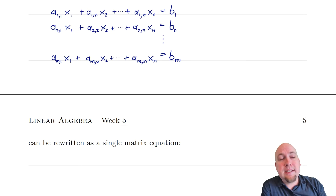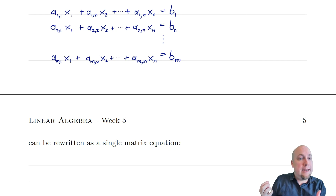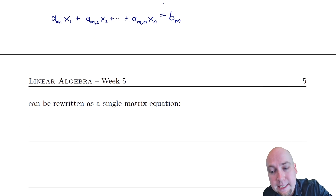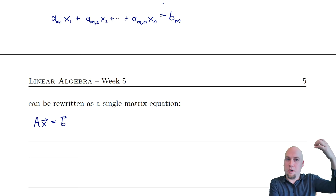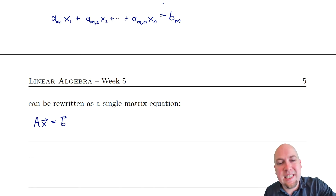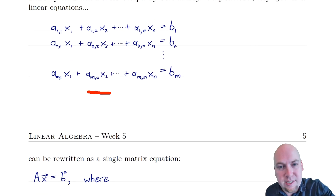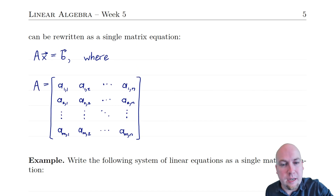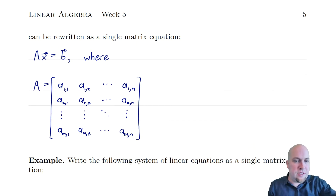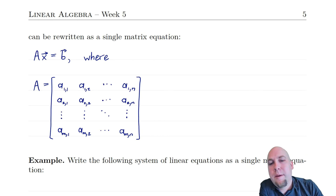This ugly linear system can be written much more compactly as a certain matrix multiplication. You can rewrite it as Ax equals b, where A is some matrix, x is some column vector, and b is some column vector. What is A? That's just the matrix you get if you take all of the coefficients — all of the little a's — and throw them into a matrix in the order you see them. So a11 goes in the top left corner, a12 in the next entry to the right, and so on. You index them row-column like always: the first subscript tells you the row, the second subscript tells you the column.